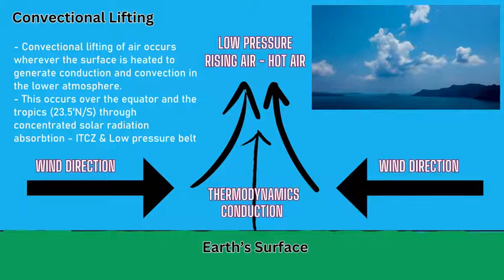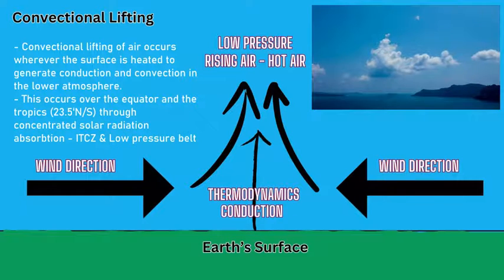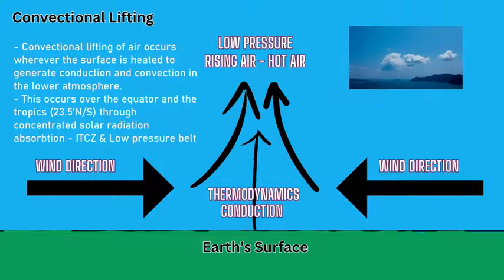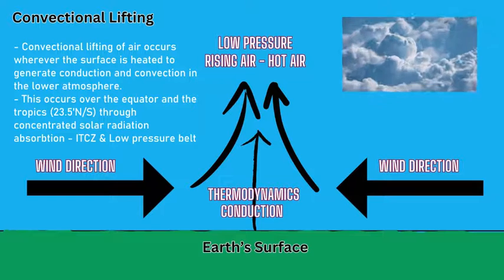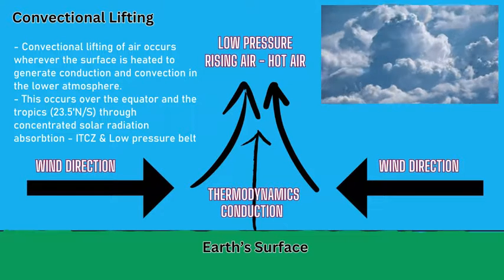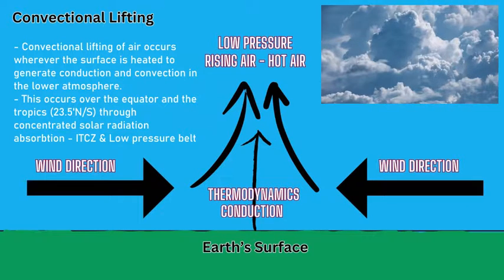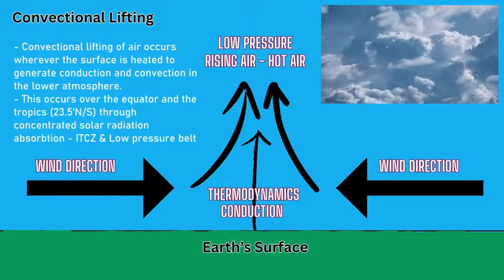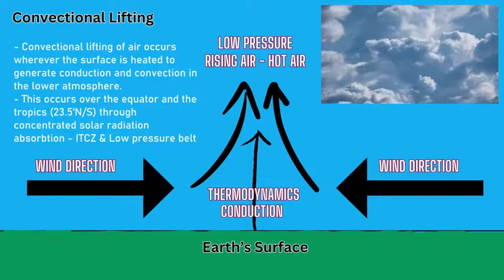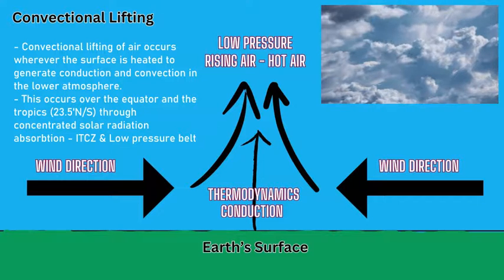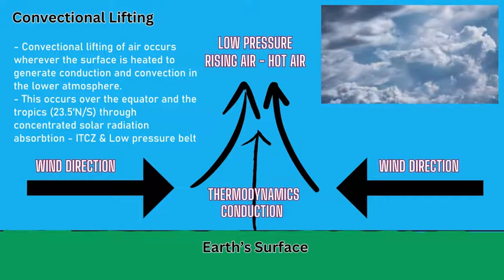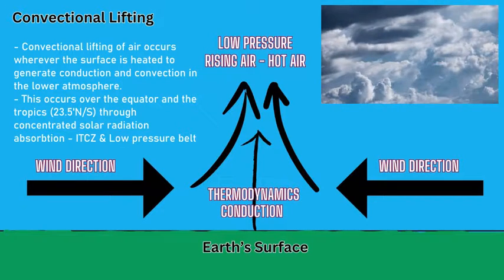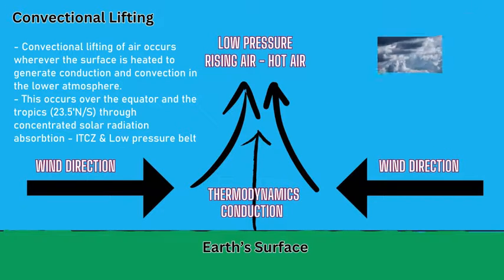This mechanism can also create thunderstorms. With heat plus the addition of water vapor and moisture in the air, you're going to get a lot of potential severe weather, thunderstorm development, vertical cloud formation, and natural phenomena like thunder and lightning.